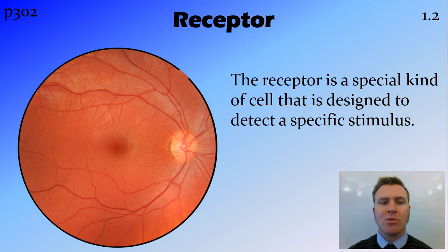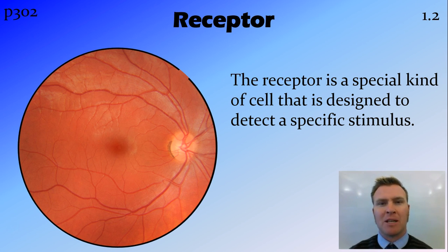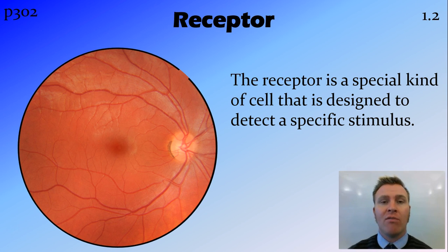The receptor is a special kind of cell — it's a neuron, a nerve cell, designed to detect a specific stimulus, and there is quite a bit of specificity here. On a basic level, your tongue can't detect light. Light is detected by special receptors found in your eye. And within your eye — we're going to look at this in more detail in the future — you actually have four different types of receptors detecting different types of light.